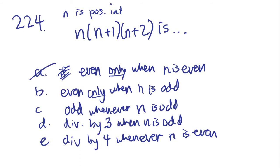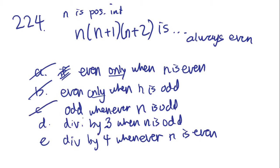That eliminates A, because A says even only when N is even — but N can be odd and the product is still even. By that same logic, B is also out. C says odd whenever N is odd, but as just established, the product will always be even, so C can never be true.